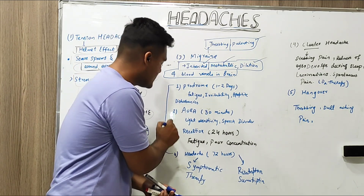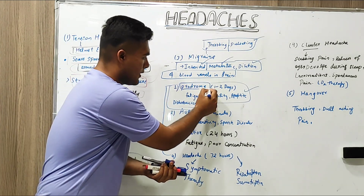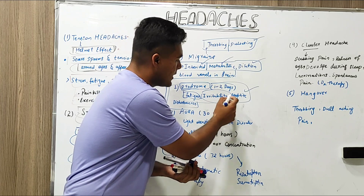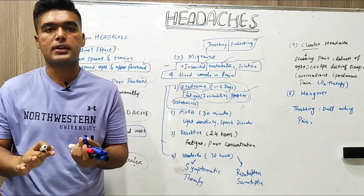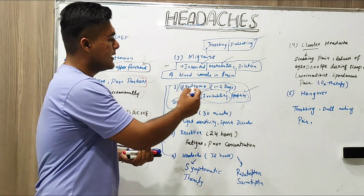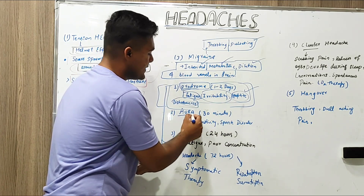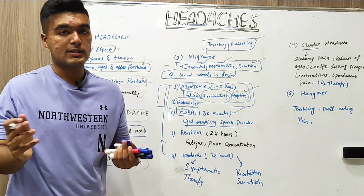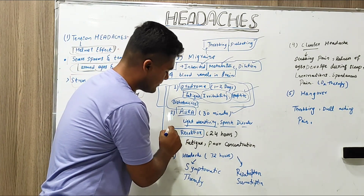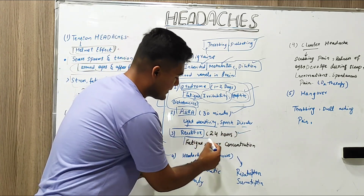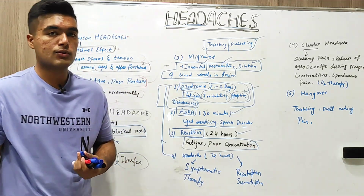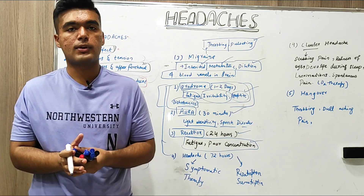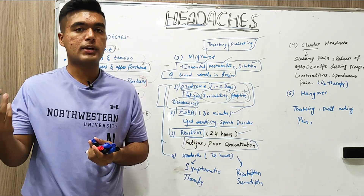There are four major subdivisions of migraine. First is prodrome, which occurs one to two days before and includes symptoms such as fatigue, irritability, and appetite disturbances — either increased or decreased appetite. Second is aura, which lasts up to 30 minutes; light sensitivity and speech disorders are the symptoms. Third is resolution, lasting about 24 hours, with fatigue and poor concentration. Fourth is the headache itself, which lasts up to 72 hours — a constantly throbbing and pulsating pain.